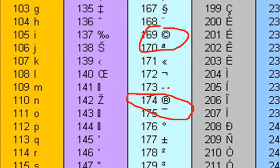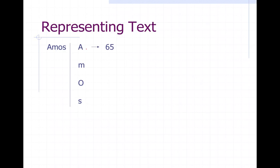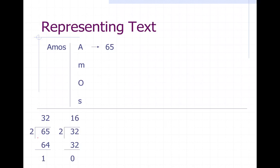Let's take my name again — Amos. Notice capital letters and lowercase letters have different number representations. First thing you do: take my name and break it down to single characters. For each character, look up what number is represented on the table. The capital A is 65.